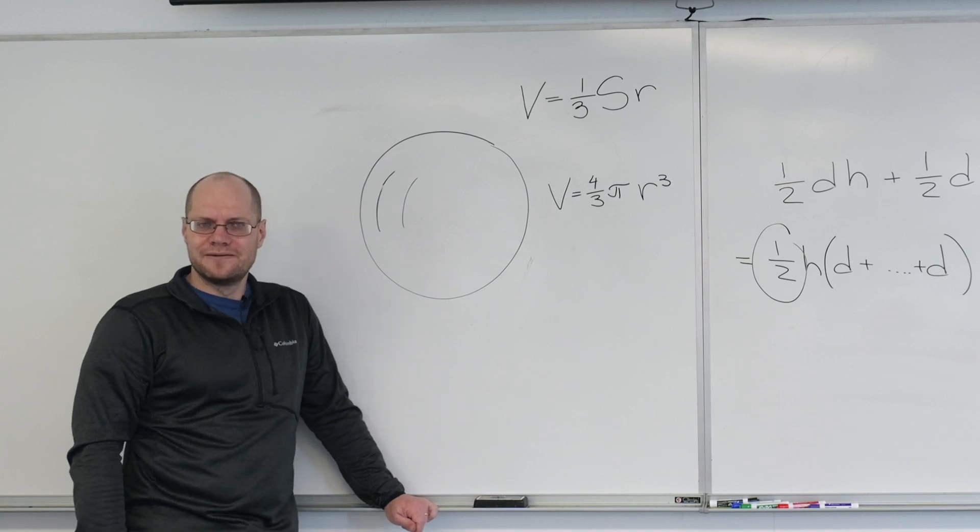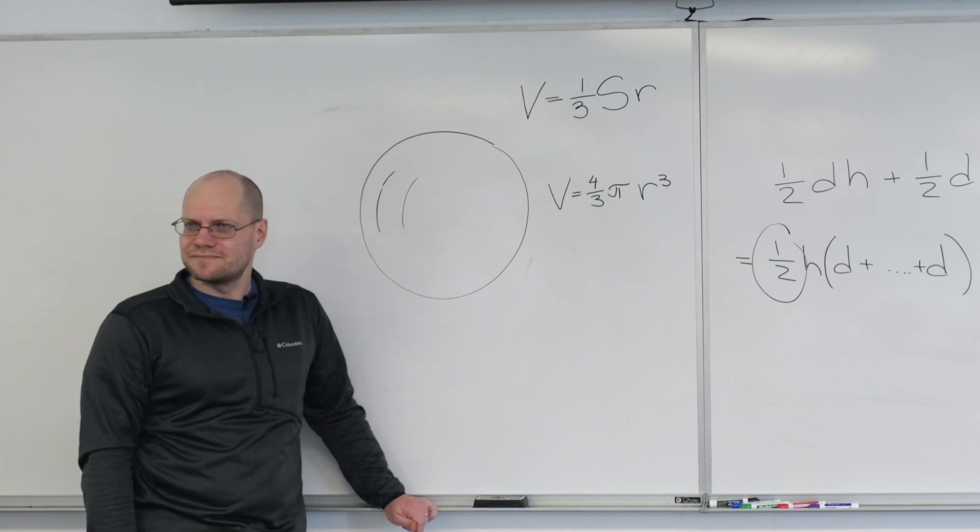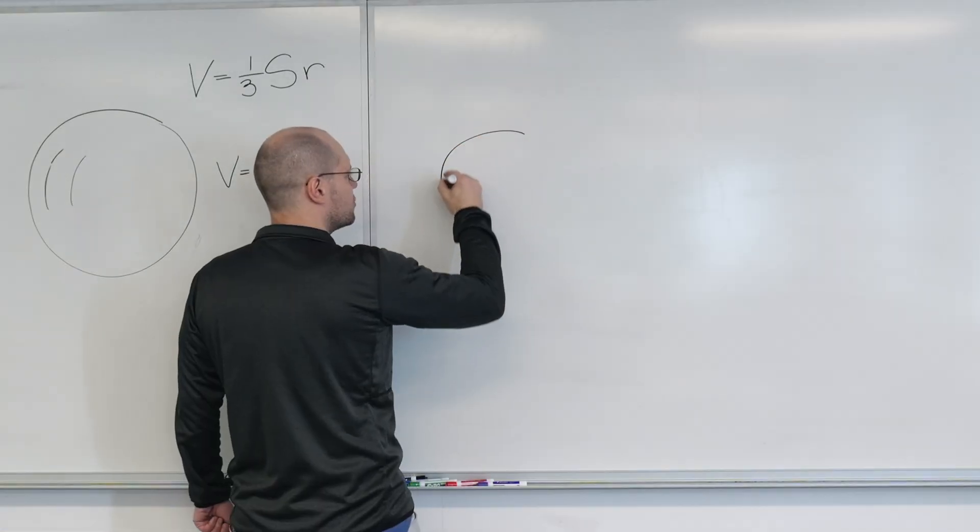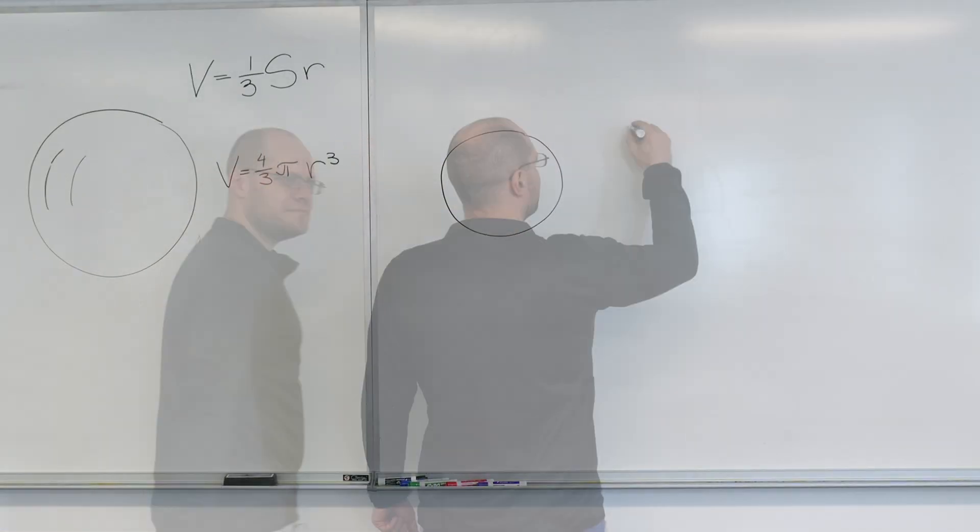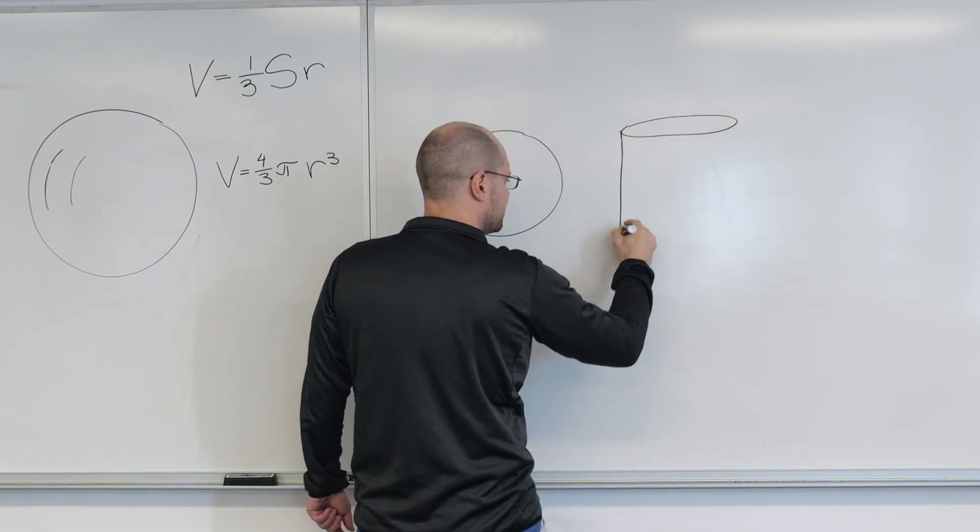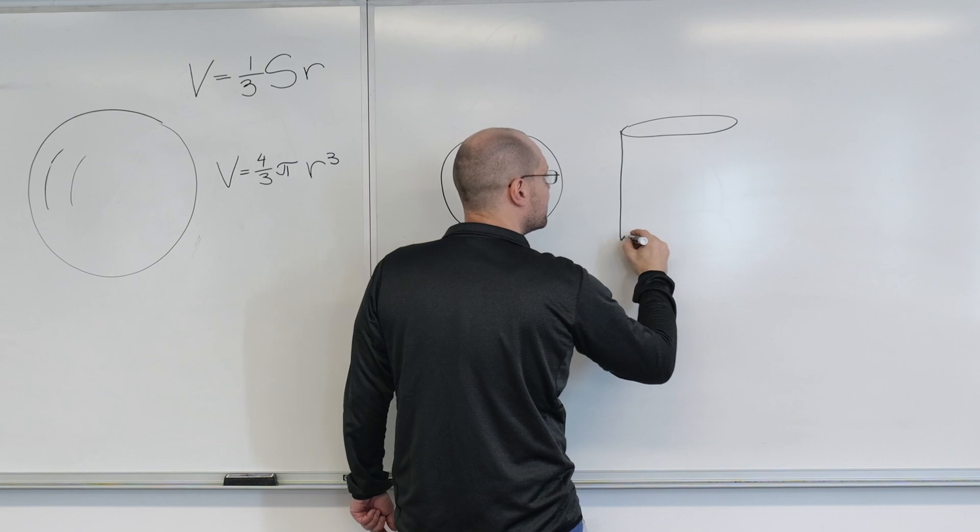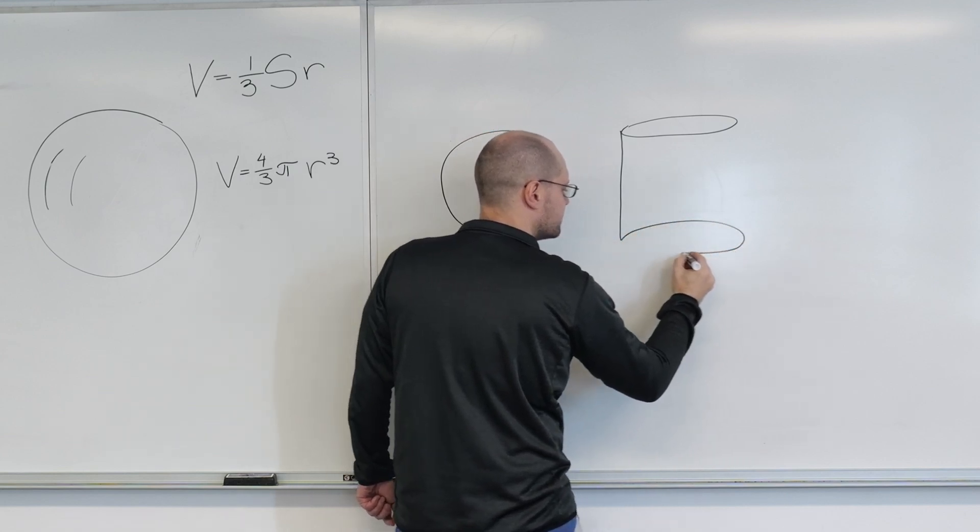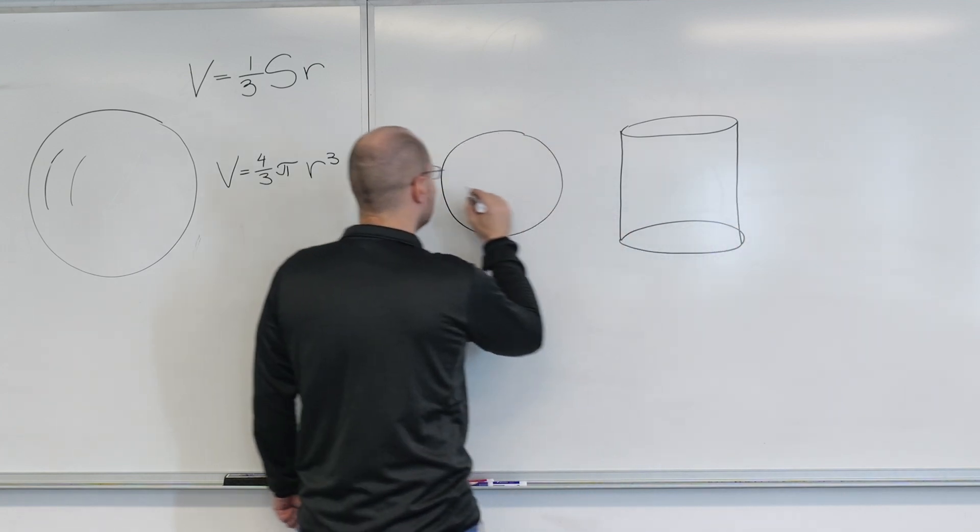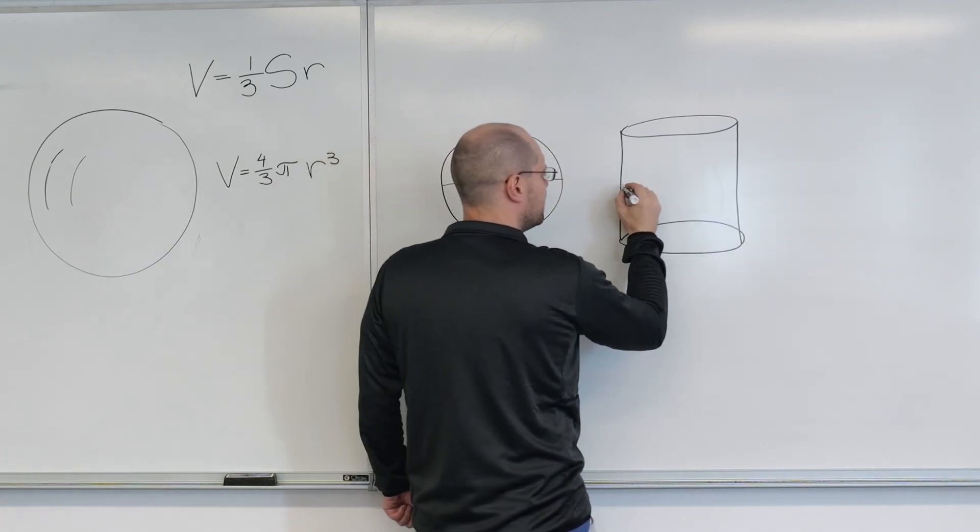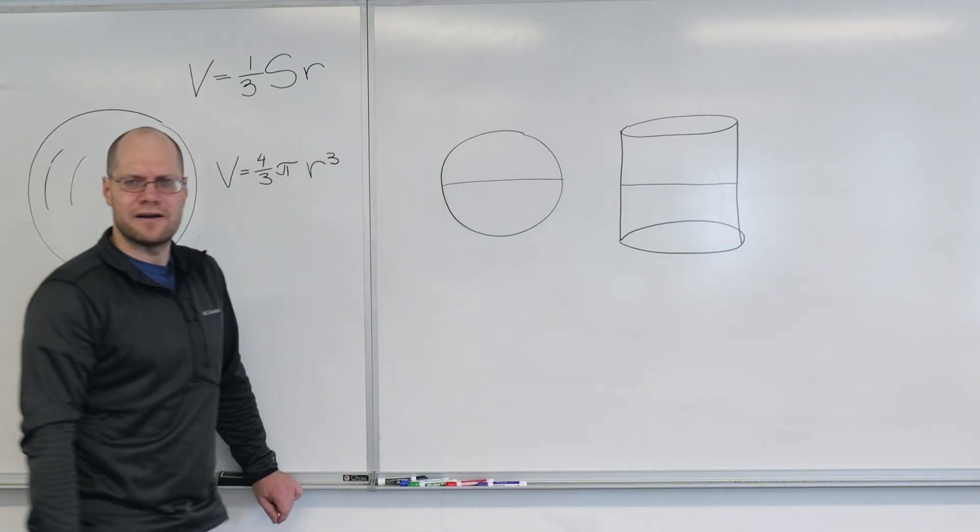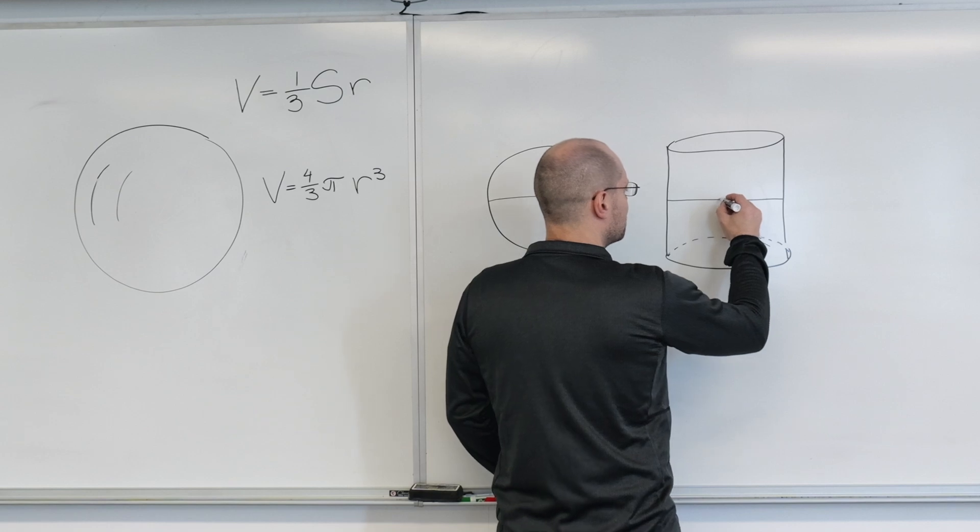Here's how Archimedes did it. Consider a sphere. Consider a cylinder of the same diameter and the same height, and we're going to compare their volumes. In fact, we'll consider half a sphere and half a cylinder, so the cylinder is actually kind of square.